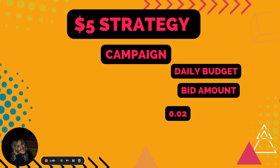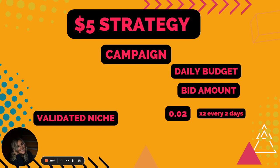I do this because it's still valuable, even if it's two cents. Then every two days, if I'm not sure about the niche, I 2X it — 4 cents, 6 cents, 8 cents. If you want to scale the bid amount faster, do it every two hours; I've done that too. The metrics you want to look at are really based off of the validated niche. Now I have validated my niche, so I know that my impressions will start getting clicks — my ads will start getting clicks around nine to fifteen cents.